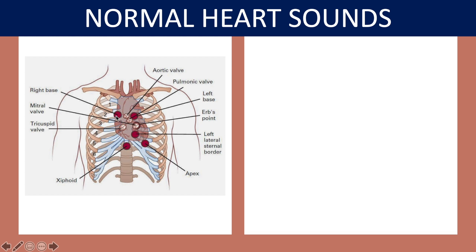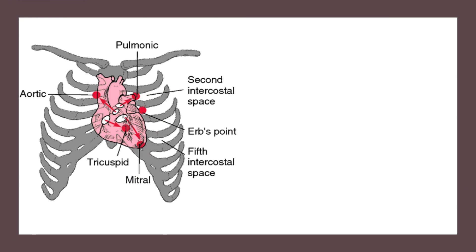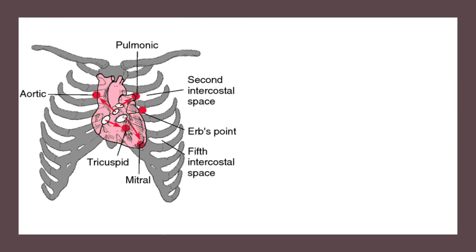So these six points — point one, two, three, four, five, six — the key ones to remember: the third point is known as Erb's point; the first is the right base on the right side; second base is the left base; then Erb's point; then the left lateral sternal border; then the xiphoid point; and finally the apex. We can see the different projections of sound when the valves close and blood flows, which correlates to the different points where you auscultate in the chest region to hear the sounds better.